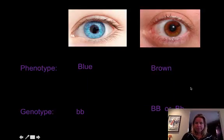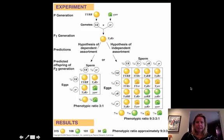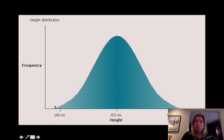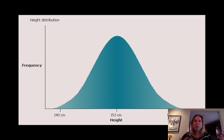This is going to be height distribution in a normal population. You can see that to be really short or to be really tall is uncommon, but to be any of the intermediates is very common. So that's why when you see someone who's really, really tall or really, really short, you notice it because it's just not as common.